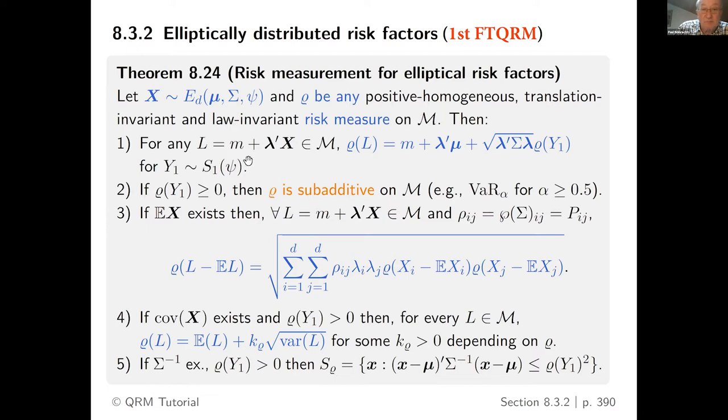Take a risk measure, very little conditions: positive homogeneous, translation invariant and law invariant on the set of linear portfolio positions on these underlying risk factors. Take any linear portfolio in that world, then the risk, you can take value at risk, expected shortfall, many more risk measures satisfy these properties, can be written as a constant, depending on the constants of your portfolio, times a scaling constant, times the risk associated to one underlying random variable. So in the elliptical world, it's easy to calculate risk measures just on the back of an envelope.